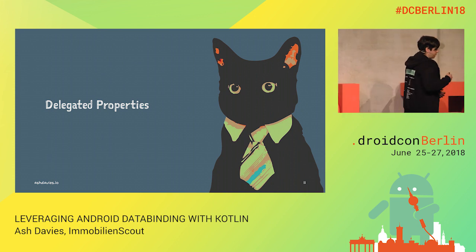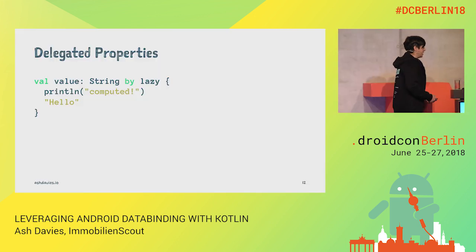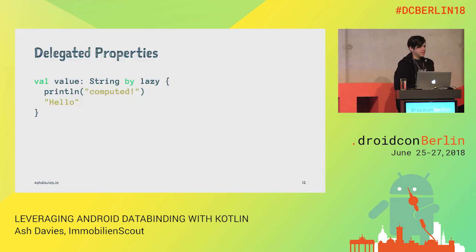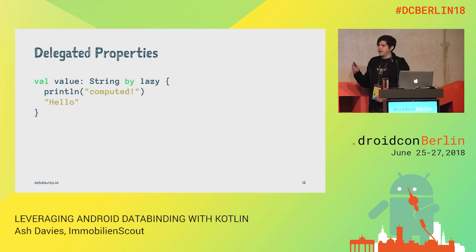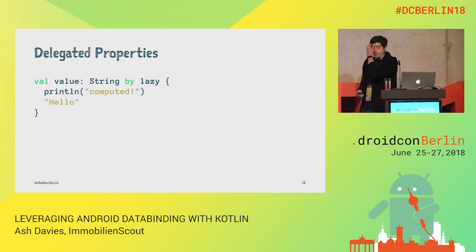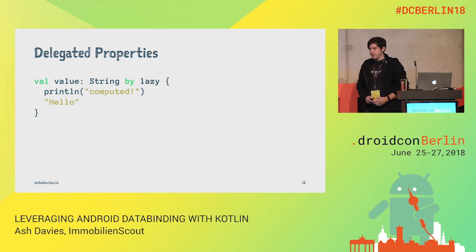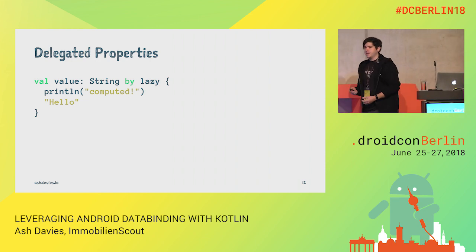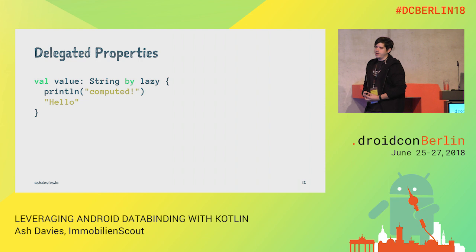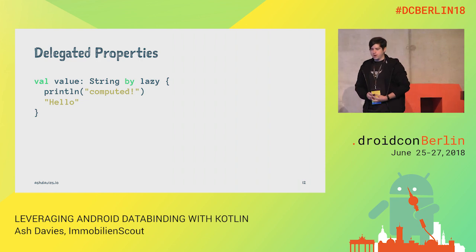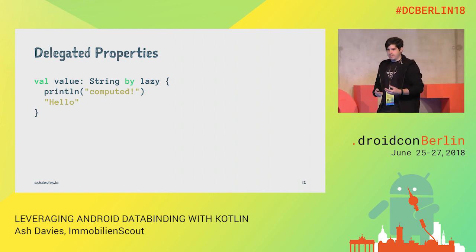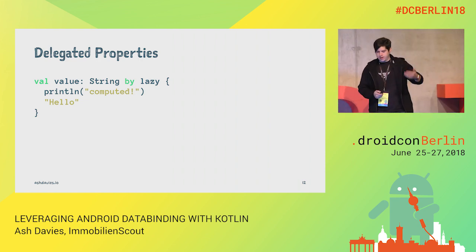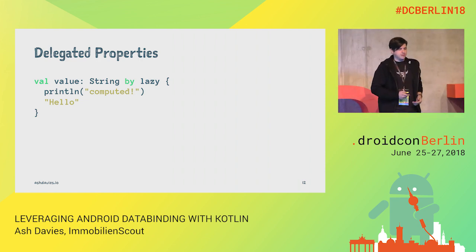For example, a delegated property would be our Kotlin lazy delegate. Here you can see the sample from the documentation, where a computed value would be evaluated only once, and then the hello value would actually be referred every time we come to access it.